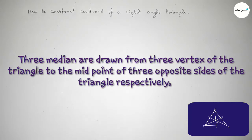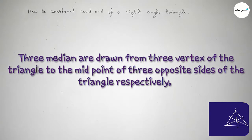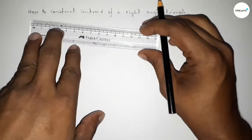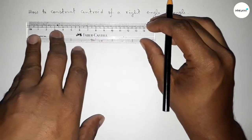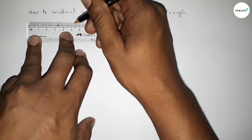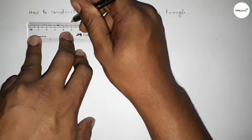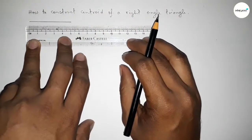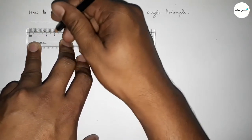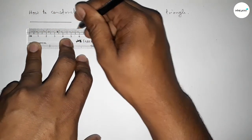The medians are drawn from three vertices of the triangle to the midpoint of the three opposite sides respectively. So first we have to construct a right angle triangle. We'll be taking two lines — first one of length five centimeters and the second one of six centimeters.